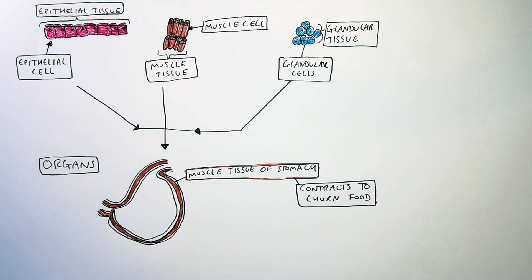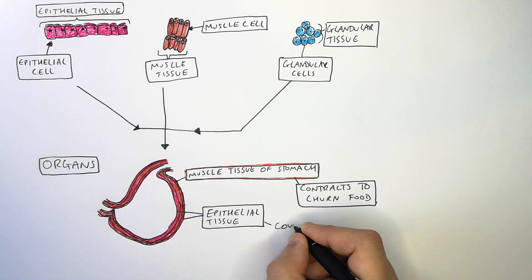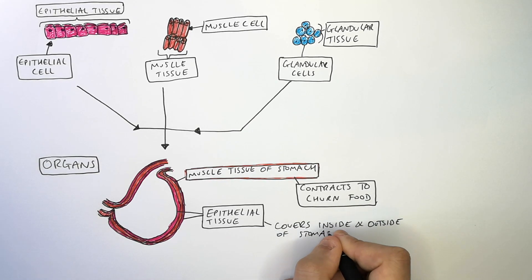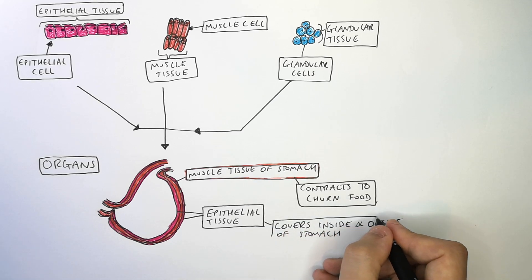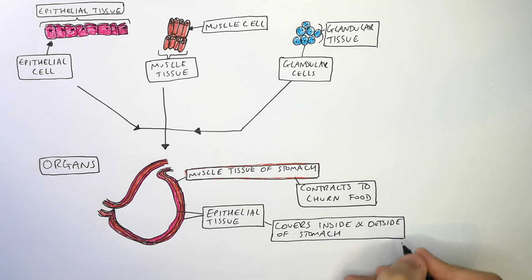Covering the muscle tissue is the epithelial tissue. The epithelial tissue covers both the inside and the outside of the stomach muscle. The epithelial tissue on the inside acts to protect the other tissue of the stomach from the hydrochloric acid which could damage your tissue.